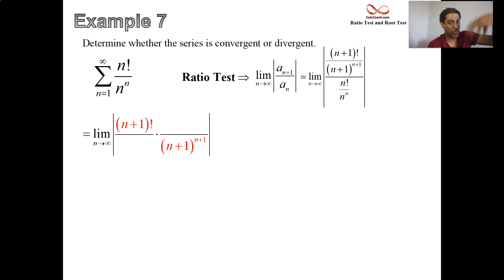So n plus 1 factorial as the numerator of one fraction and n plus 1 quantity raised to the n plus 1 as the denominator in another fraction. And what happens with the original a sub n terms is they get reciprocated. So underneath the n plus 1 quantity factorial is an n factorial. On top of the n plus 1 quantity to the n plus 1 is an n to the n.